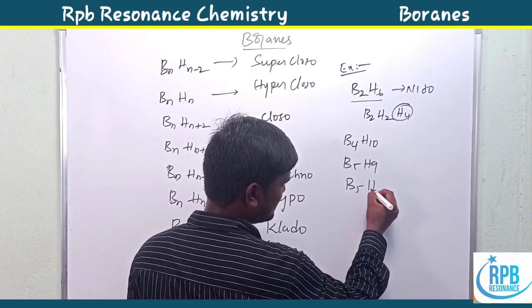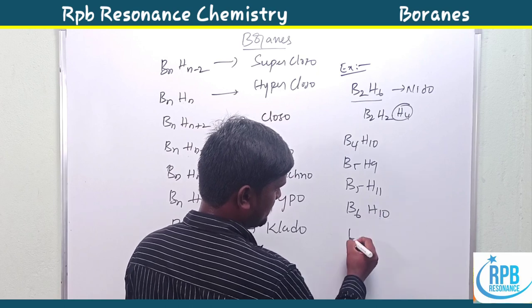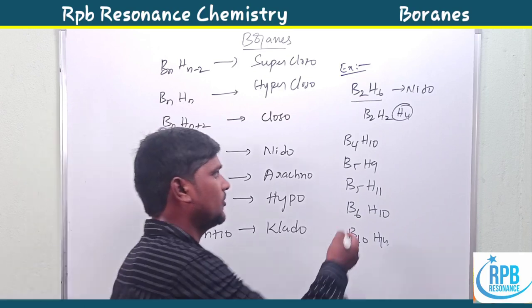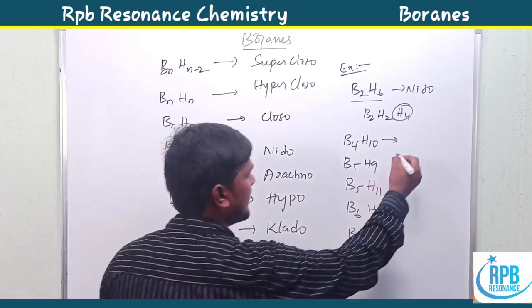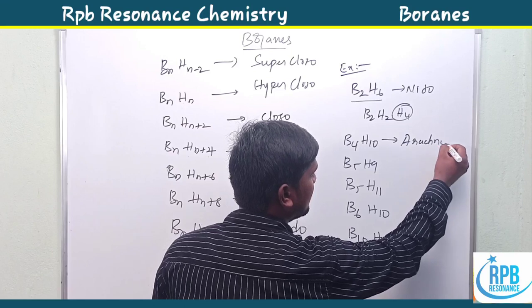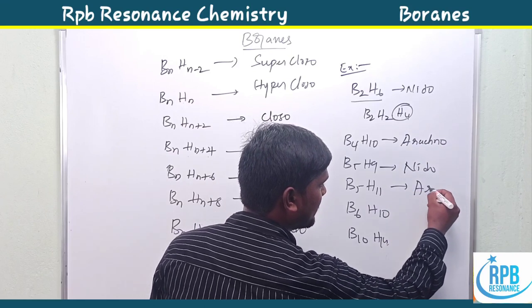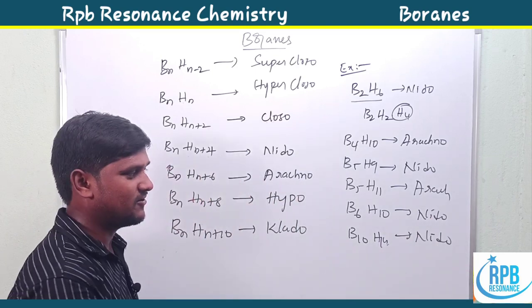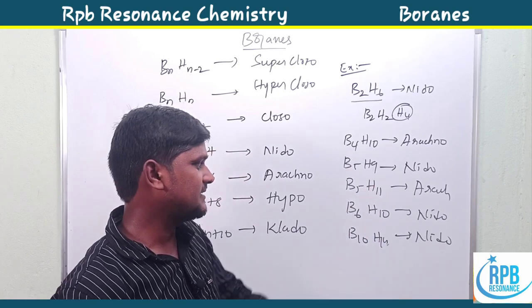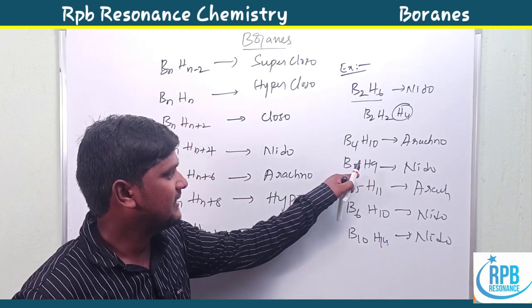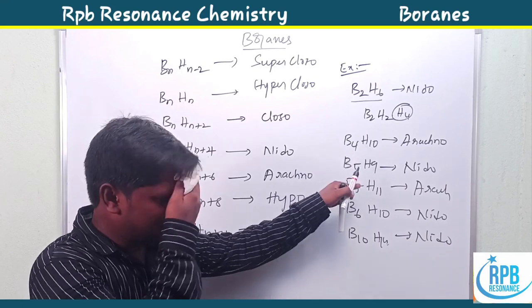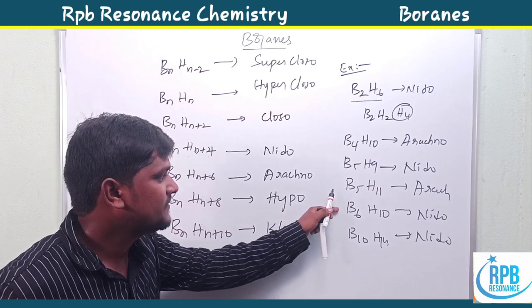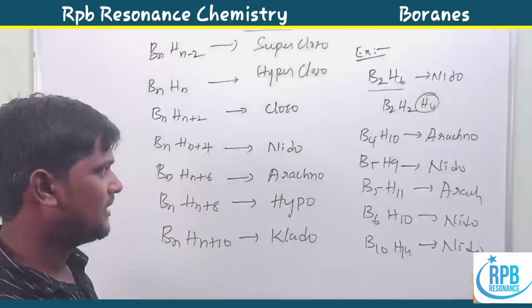Let us examine B6H10 and B10H14. For B6H10: six more hydrogens than borons (BnHn+6) — that is arachno type. For B10H14: four more hydrogens than borons (BnHn+4) — that is nido type. So four extra hydrogens gives nido, and six extra hydrogens gives arachno.